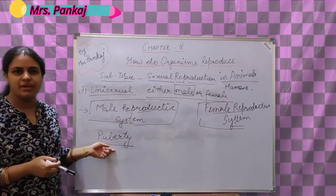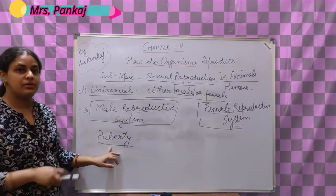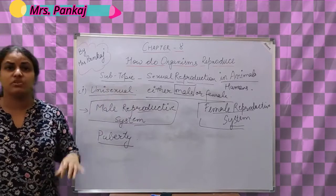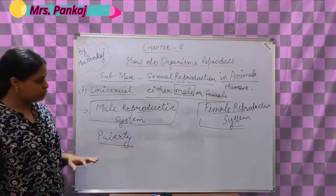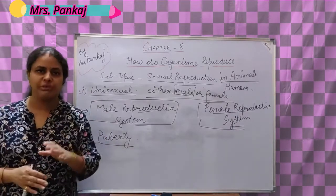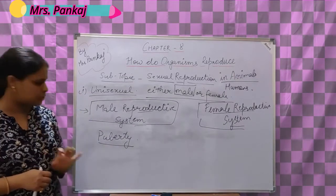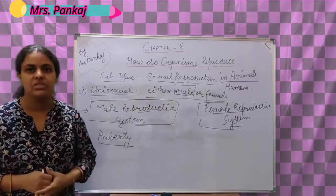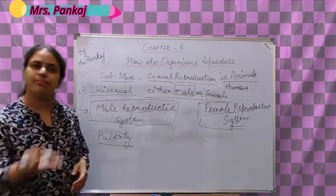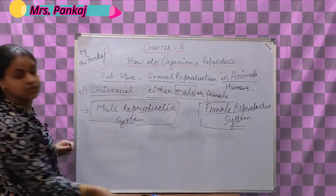But before going to start with this, there is one important word - puberty. You have already studied this in class 8. This word is very important because this age is required before the process of reproduction can occur; both organisms must attain the age to start this process. Puberty is the age at which the reproductive organs of human males and females become functional or start producing gametes, and at this age boys and girls become sexually mature.